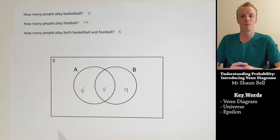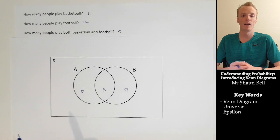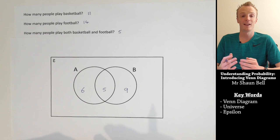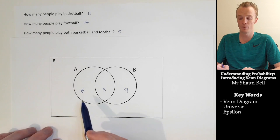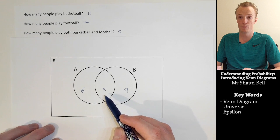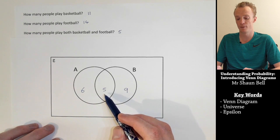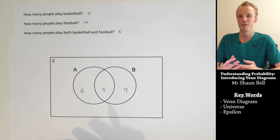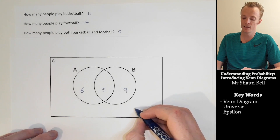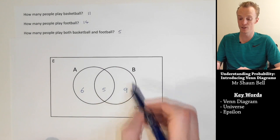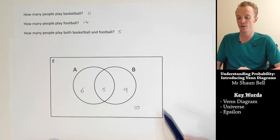There is one more group of people within our universe that needs to be represented: those who don't play either football or basketball. Because we know there are 30 people in total, we count how many have already been represented. 6 only played basketball, plus 5 played both is 11, plus 9 only played football gives 20. Subtracting 20 from 30 gives us 10 people who don't play either sport. We represent them outside the circles but within the rectangle of our universe.